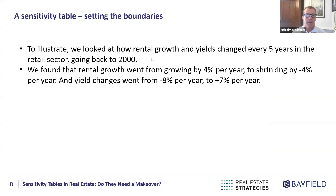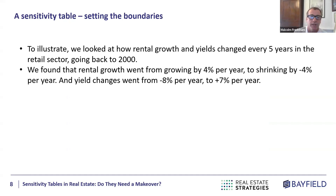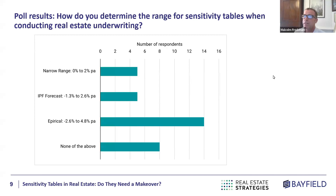We looked back using the MSCI series at retail, using rolling five-year time periods back to the year 2000. The range of rental growth ran from about plus four percent per annum to minus four percent per annum, and the yield shift ran from minus eight percent per annum up to plus seven percent per annum. That's what I'd call an empirical approach, and empirical came top in our LinkedIn poll.